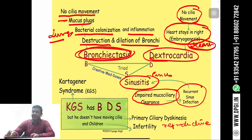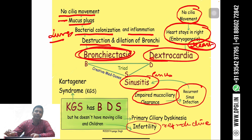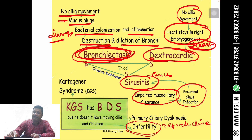The fourth feature of Kartagener syndrome is infertility. In males, the sperms become immobile because their cilia are immobile, so the sperm cannot be transported in the fallopian tube. In females, the fallopian tube is lined by ciliated epithelium; when cilia become immobile, the ovum is not transported toward the uterus and cannot be fertilized by the sperm. This leads to infertility. So the four features of Kartagener syndrome are bronchiectasis, dextrocardia, sinusitis, and infertility.